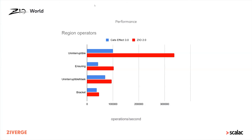In ZIO 2.0 I've come up with what I think is the best possible design for supporting region-based operators. The benchmarks show: uninterruptible makes an effect uninterruptible, ensuring attaches a finalizer, uninterruptibleMask creates an uninterruptible region with holes inheriting the interruptibility status of the parent, and bracket is for resource safety. ZIO 2.0's runtime system head-to-head with Cats Effect 3.0 just blows it out of the water in every benchmark — in some cases more than three times faster. This means you no longer need to shy away from heavyweight operators like adding finalizers or bracket even in performance-critical code.